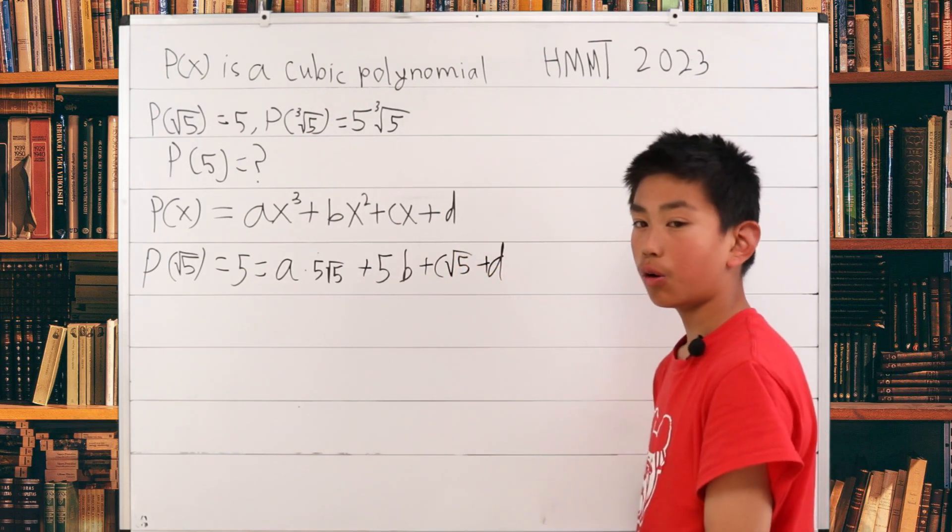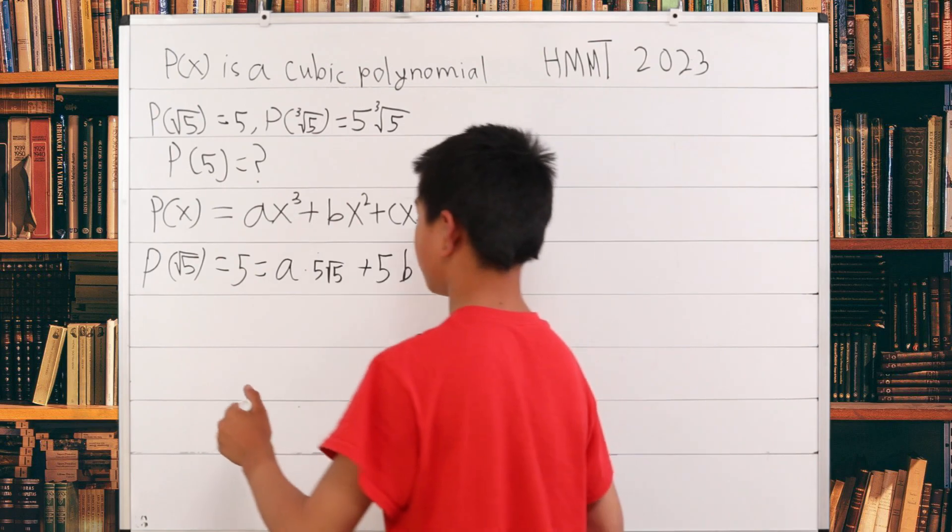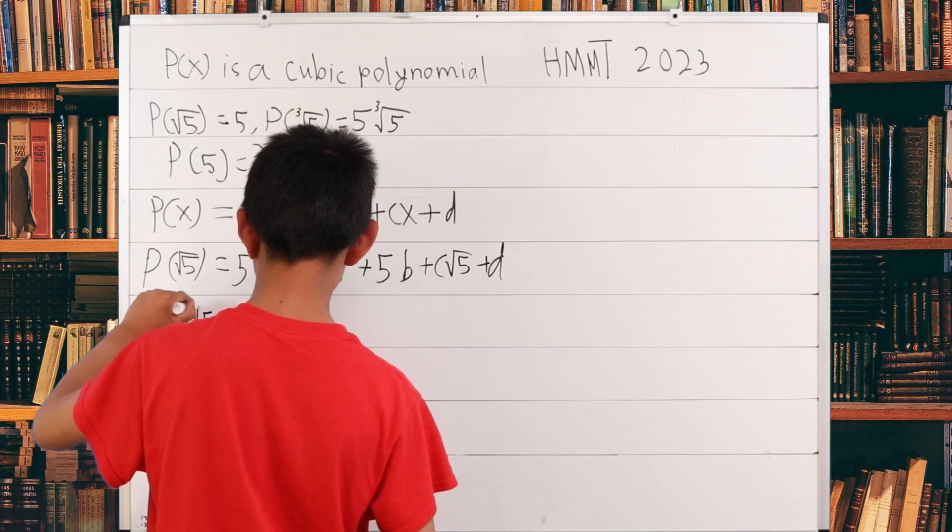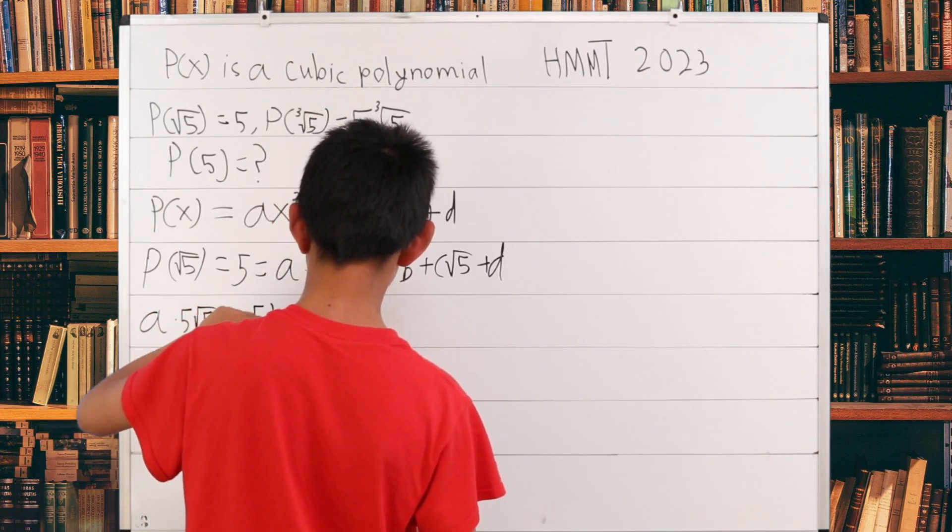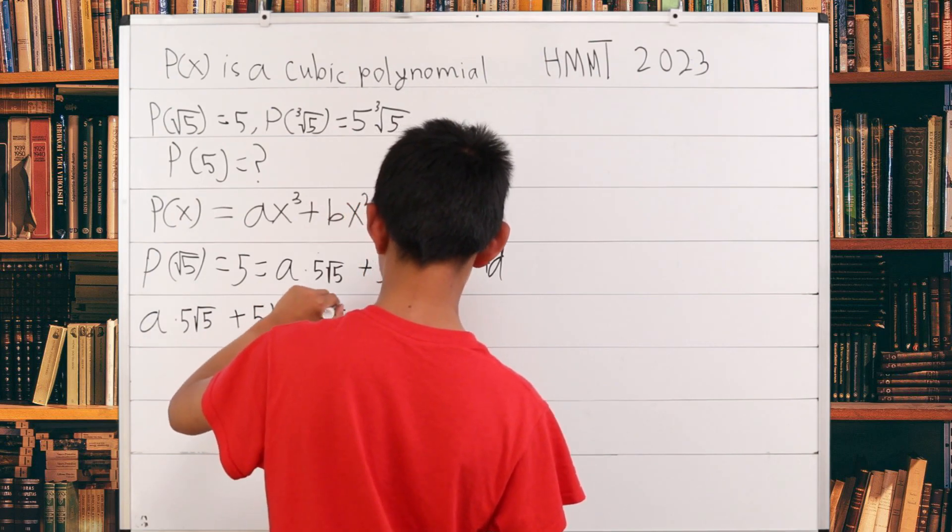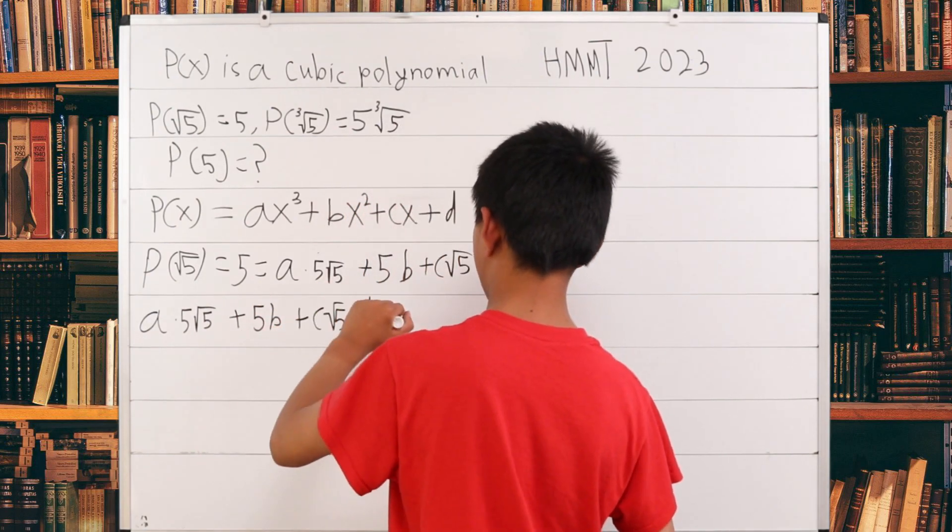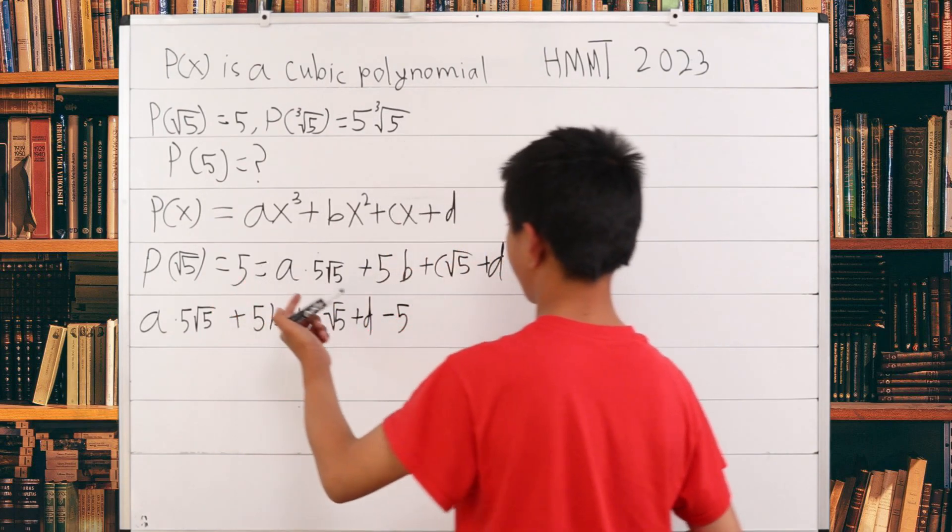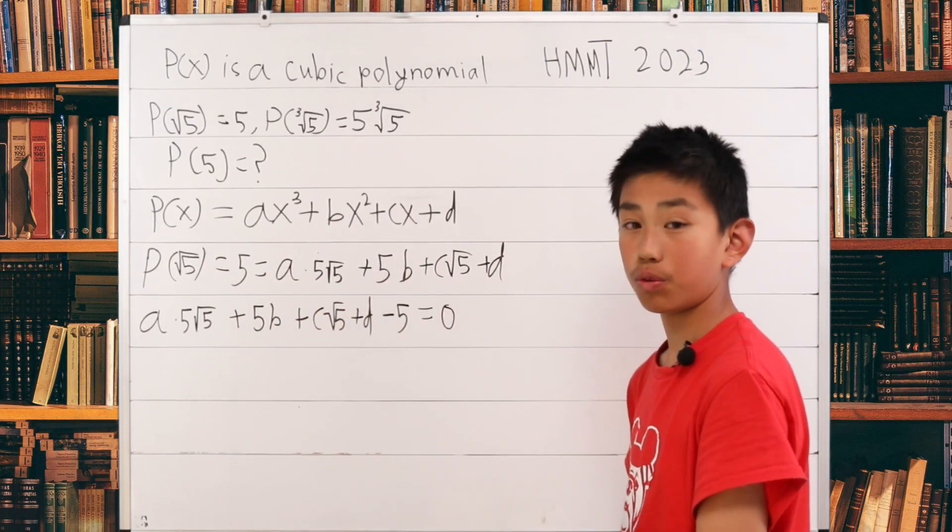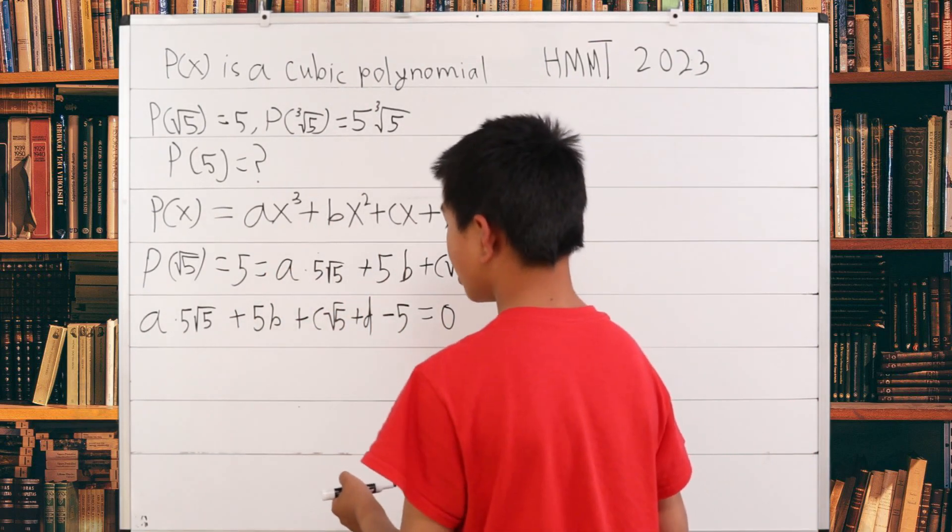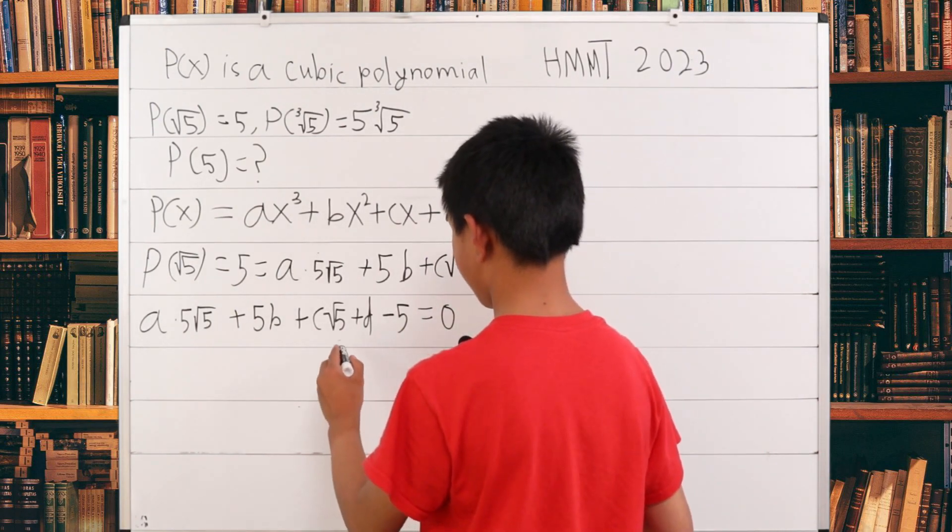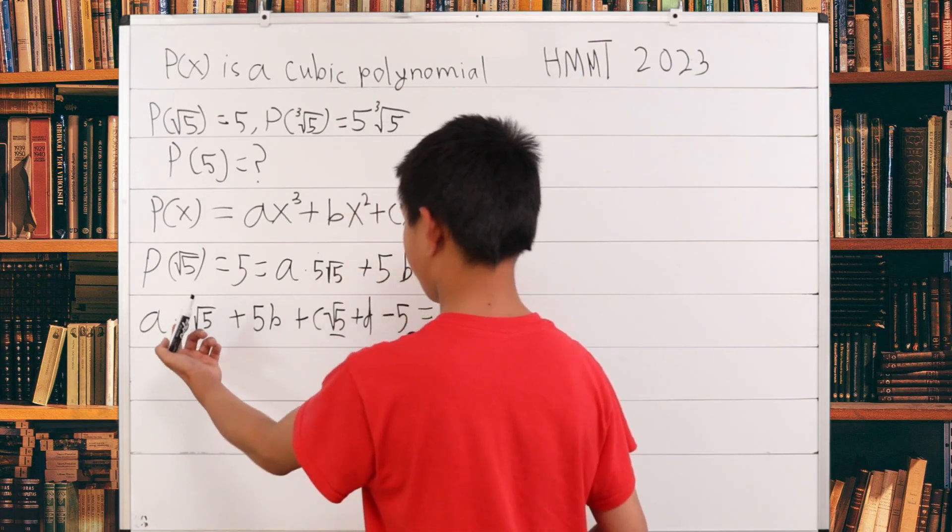We can also do something here. We have a·5√5 + 5b + c√5 + d minus 5. You subtract the 5 to make this zero. What we can do is take out factors. The first factor we're going to take out is √5 from these two terms.